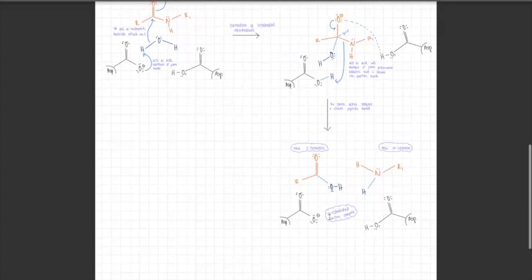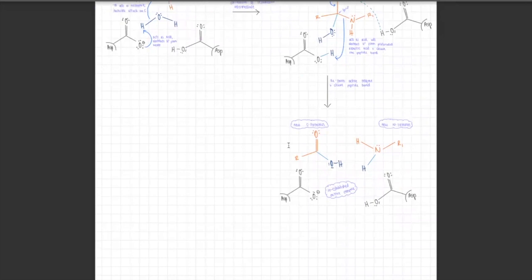This causes the carbonyl to reform and breaks down the tetrahedral intermediate. In breaking this bond and breaking down the tetrahedral intermediate, you get the new C-terminus and the new N-terminus in one step, and you have the re-established active enzyme. It is essentially a hydrolysis mechanism.